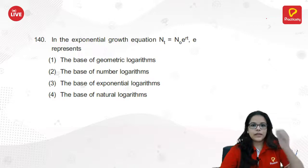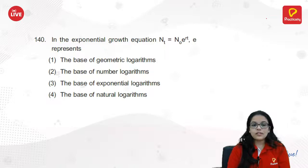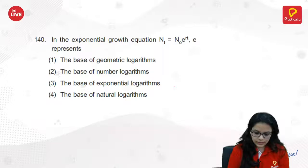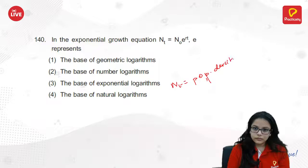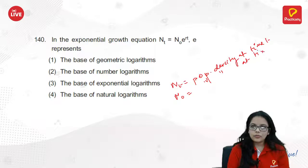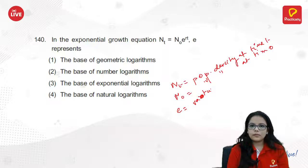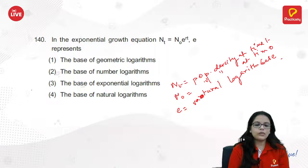The exponential growth equation: Nt is population density at time t, N₀ is population density at time 0. E is the base of natural logarithms.